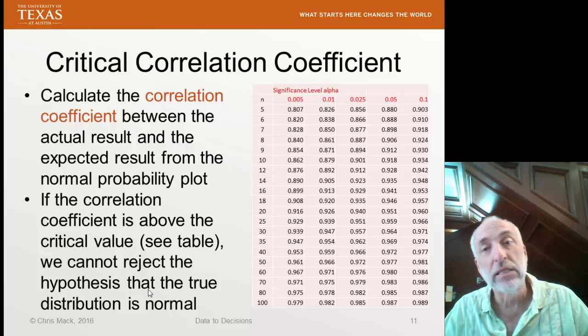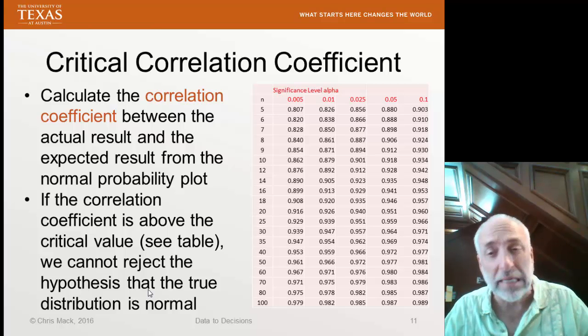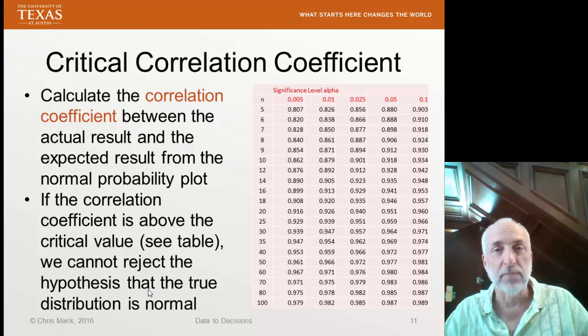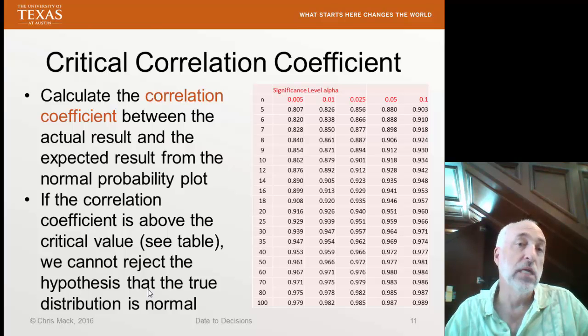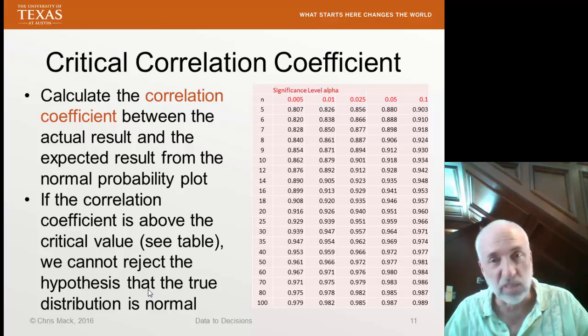Because we're plotting something that we think should be the line y equals x, we would expect to see a correlation coefficient close to 1. So we can simply calculate the correlation coefficient of the actual versus expected and compare to this table.